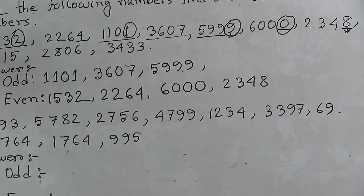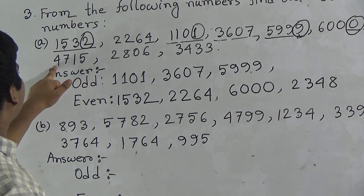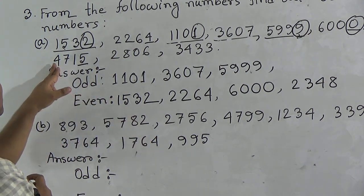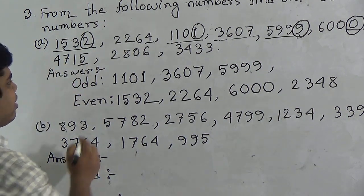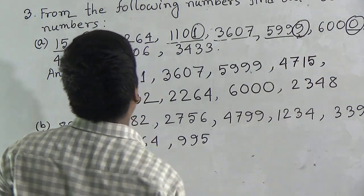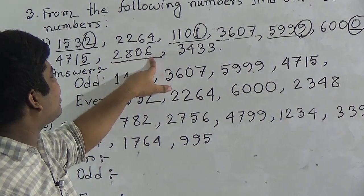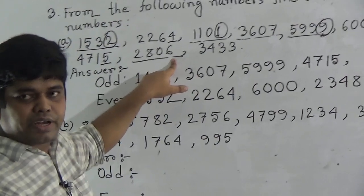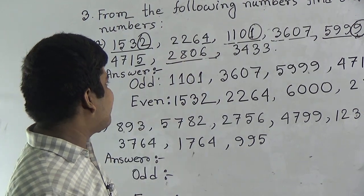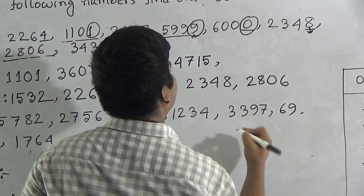Our next number is four thousand seven hundred fifteen. Its ones place digit is five, which is an odd number. So four thousand seven hundred fifteen is odd, and it is written in the odd number section. Next number is two thousand eight hundred six. The ones place digit is six, which is even. So two thousand eight hundred six is even, and we write it in the even number section.